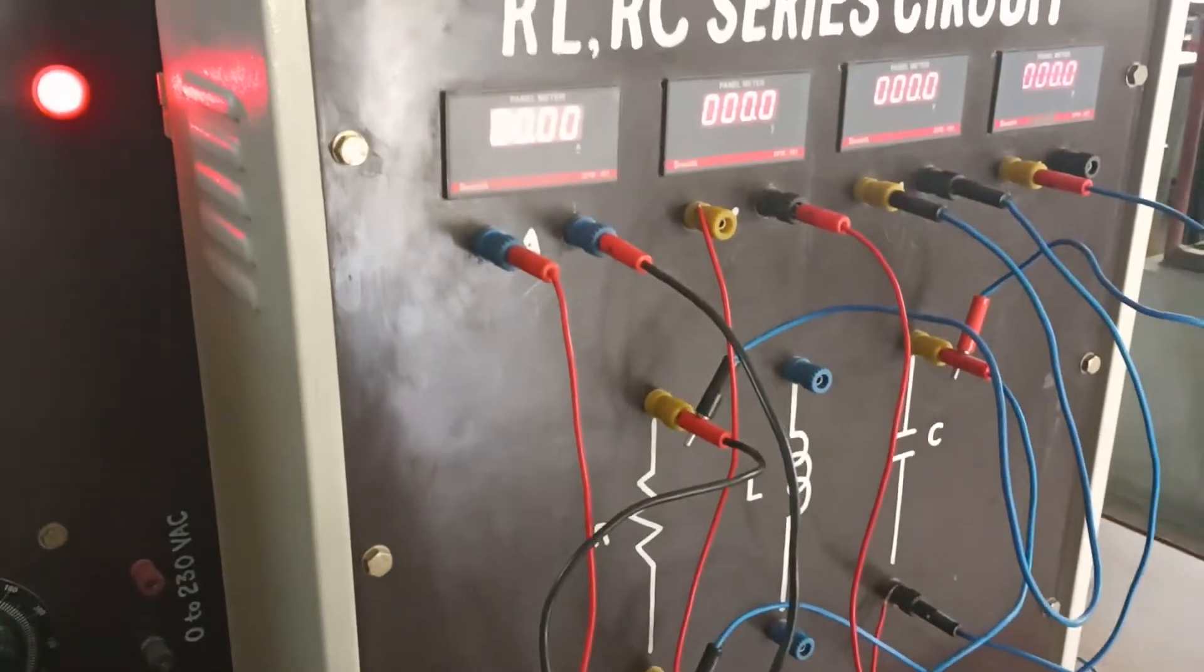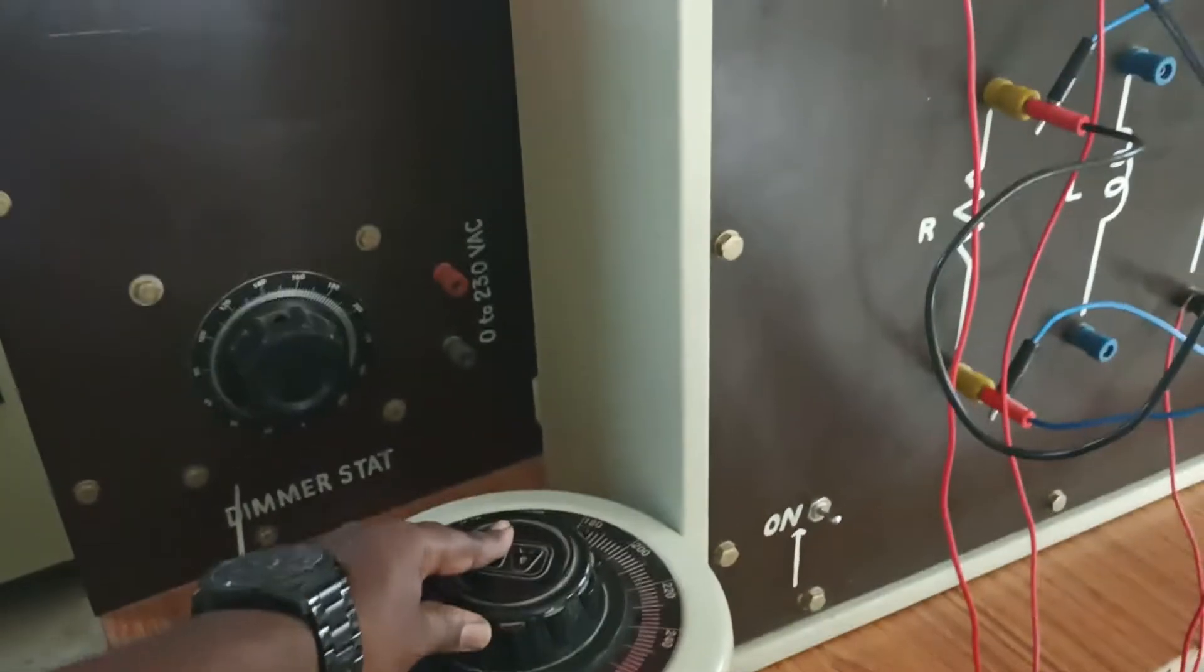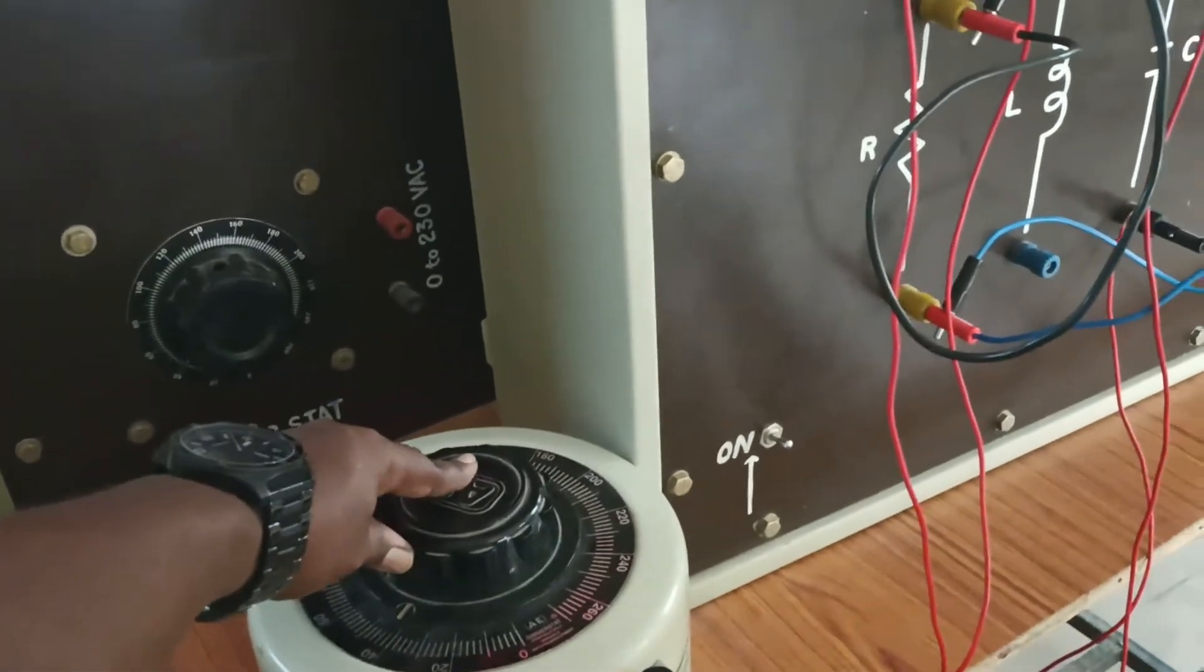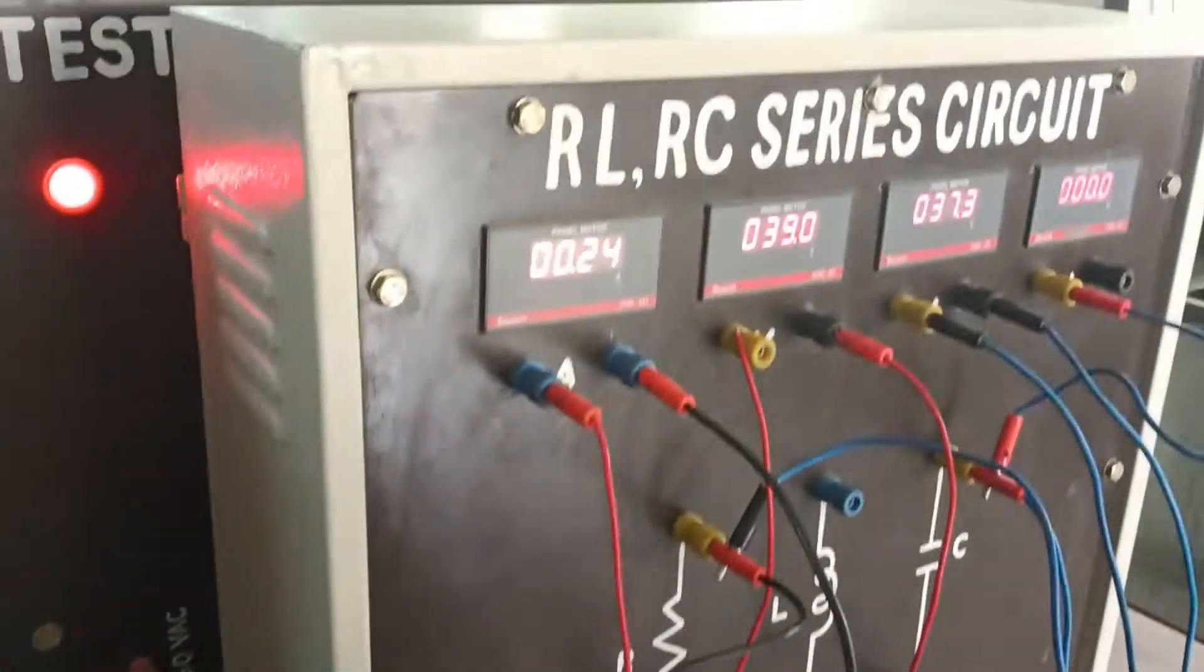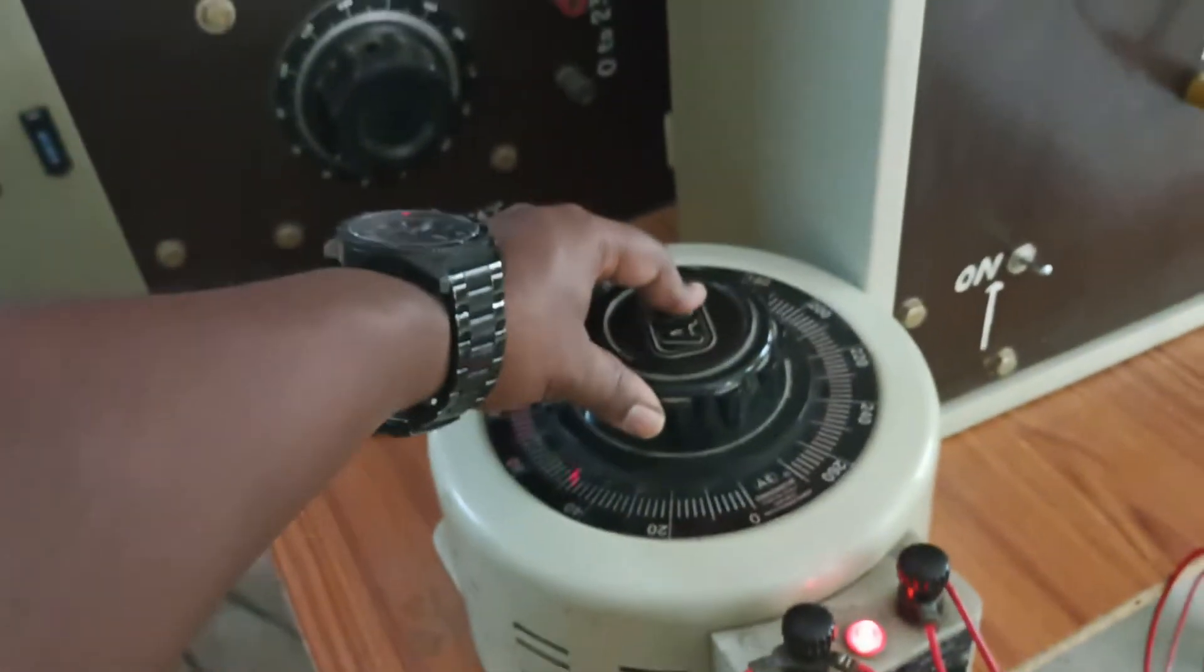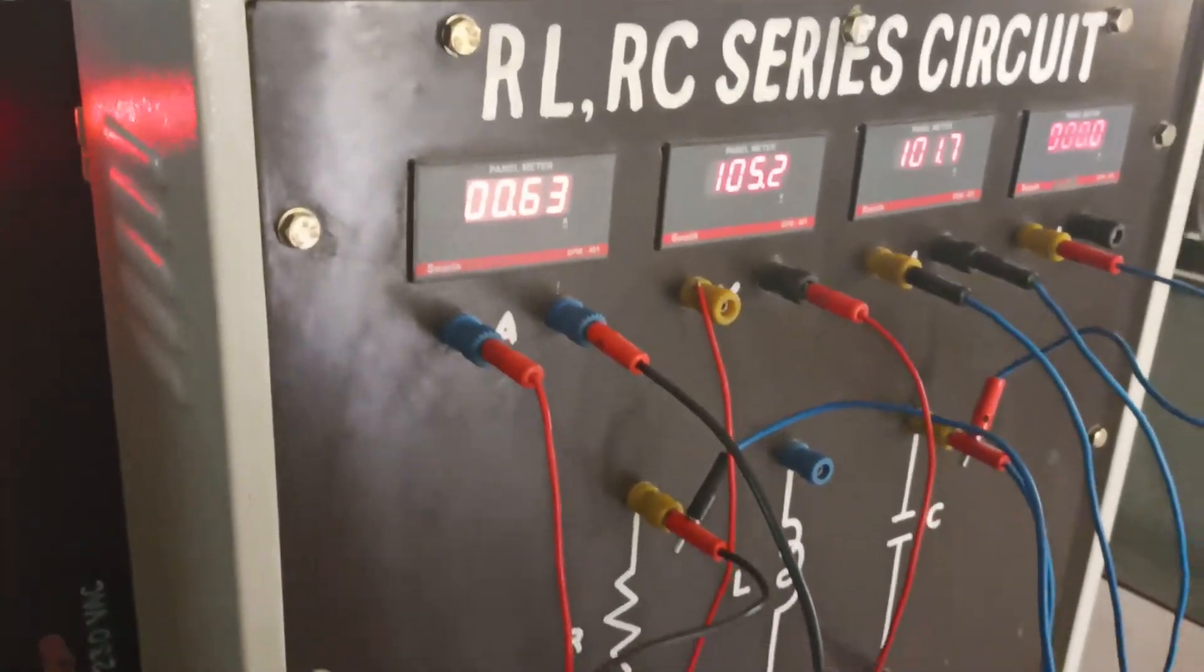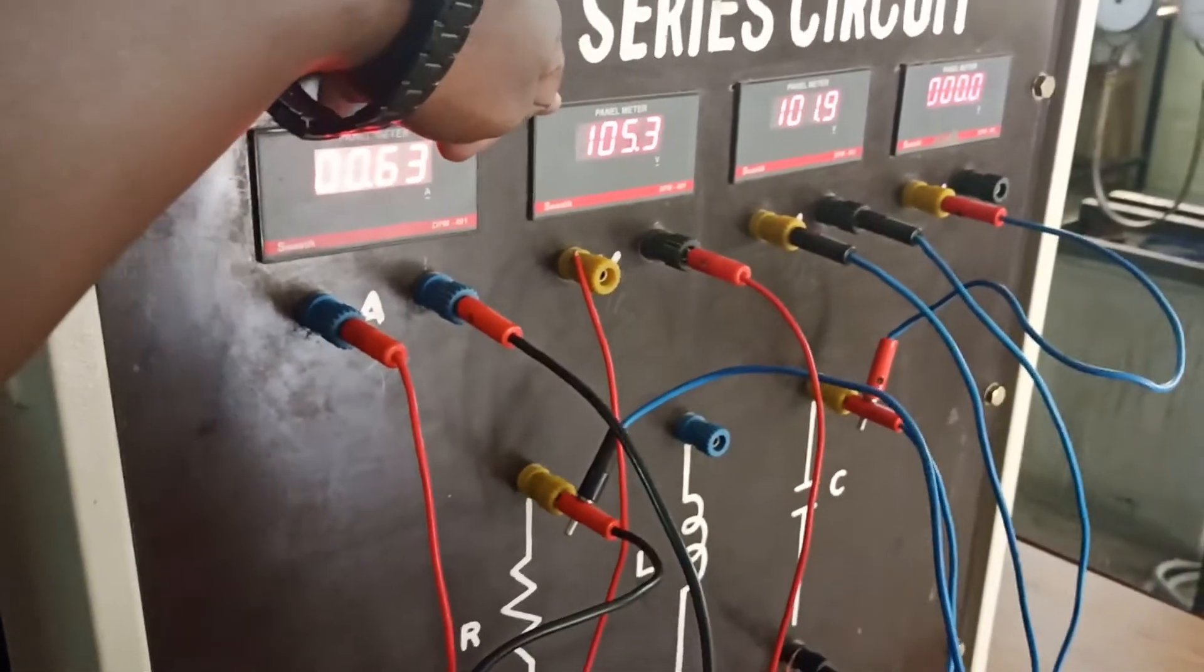I will keep on applying the voltage here by varying this autotransformer. You can see the autotransformer is varying and the voltage is reflected. You have to vary from here so that is the voltage, the applied voltage.